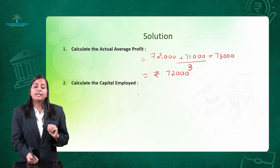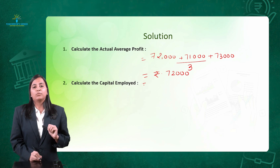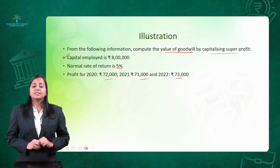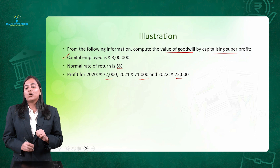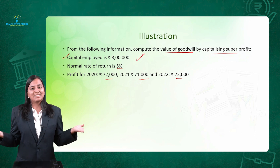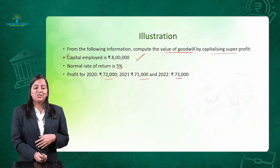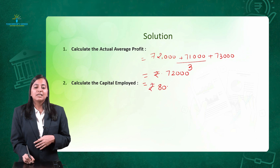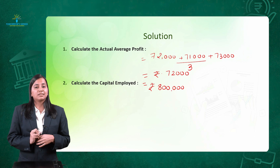Step number 2: capital employed. In this question, capital employed is given to us directly as rupees 8 lakhs, so our work is reduced here. Capital employed is rupees 8 lakhs.